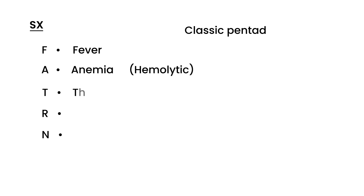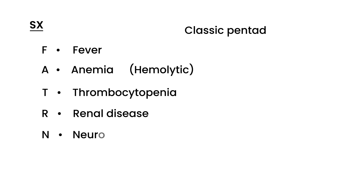The T is for thrombocytopenia — low platelets — the R is for renal disease or renal failure, and the N is for neurologic abnormalities. This classic pentad is very important. The neurologic abnormalities are the predominant feature of TTP, and because of that, it's very classic in clinical vignettes — 90% of TTP cases have altered mental status.